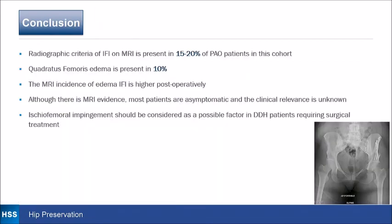In conclusion, IFI is present preoperatively in 15–20% of our patients. Quadratus femoris edema is present in 10%, and the incidence of edema and IFI is higher postoperatively. Although there is MRI evidence, most patients are asymptomatic and the clinical relevance is still unknown. Ischial femoral impingement should be considered as a possible factor in DDH patients requiring surgical treatment.